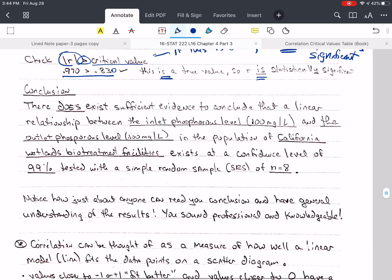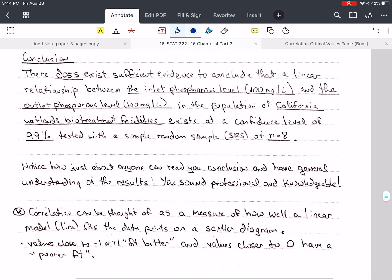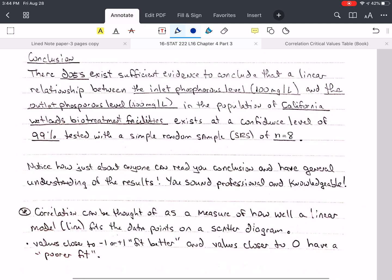So this is true. So R is statistically significant. So now we need to write our conclusion. And I gave you a sentence that you need to use, and I've underlined where I've put things in. So since it is significant, I put does exist. If it's not significant, I say does not. So there does exist sufficient evidence to conclude that a linear relationship between the X value, and that's the inlet phosphorus level in 100 milligrams per liter.